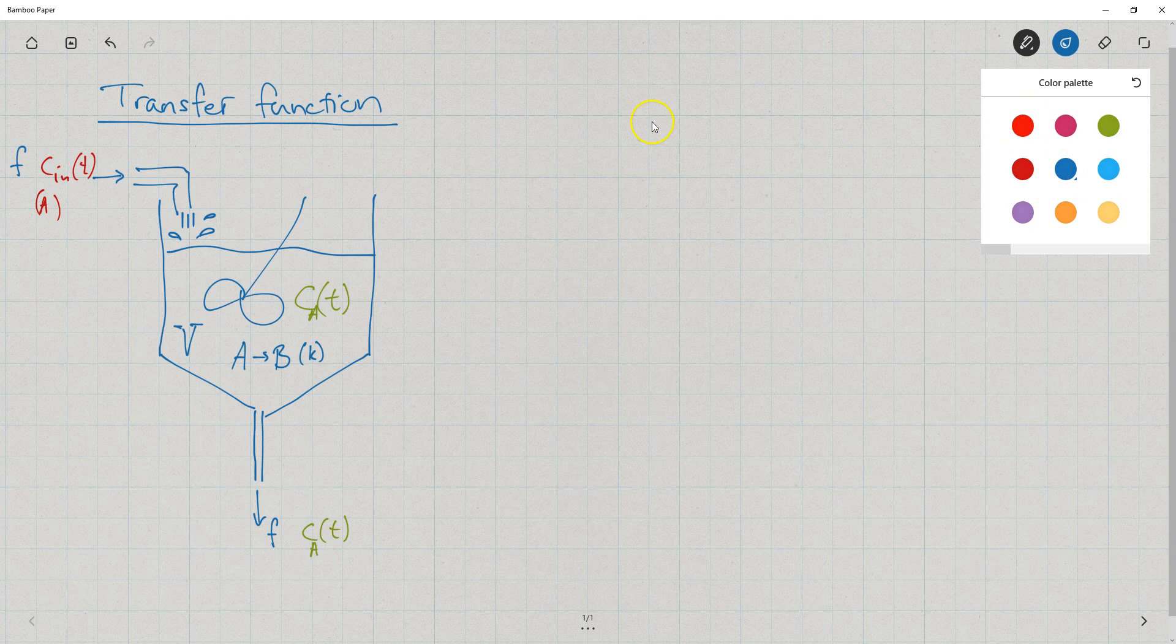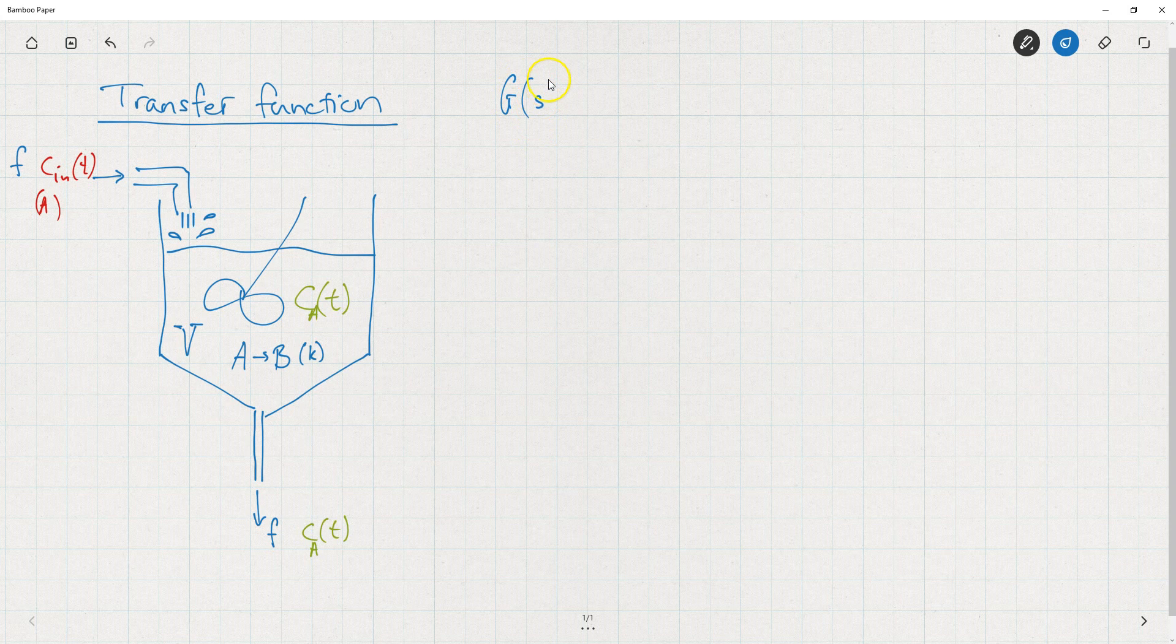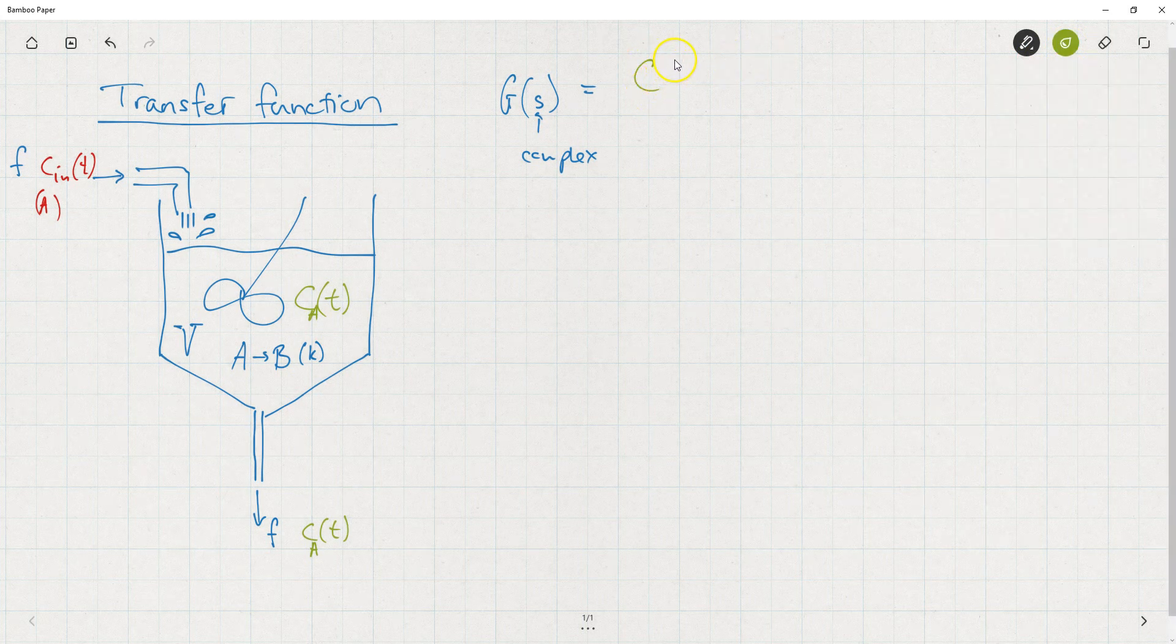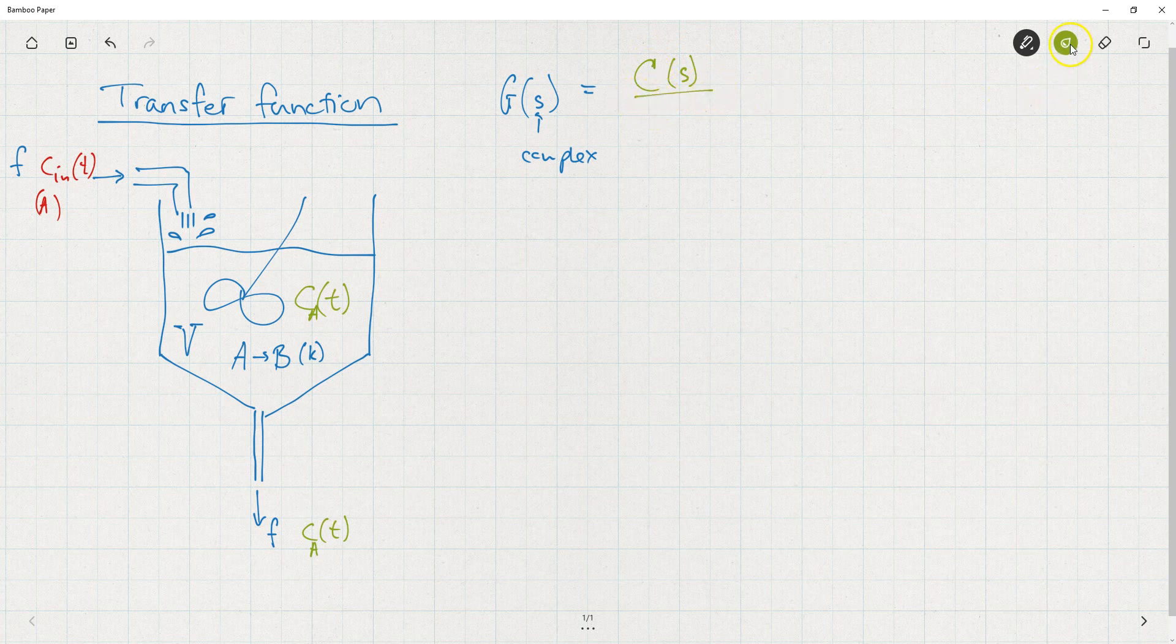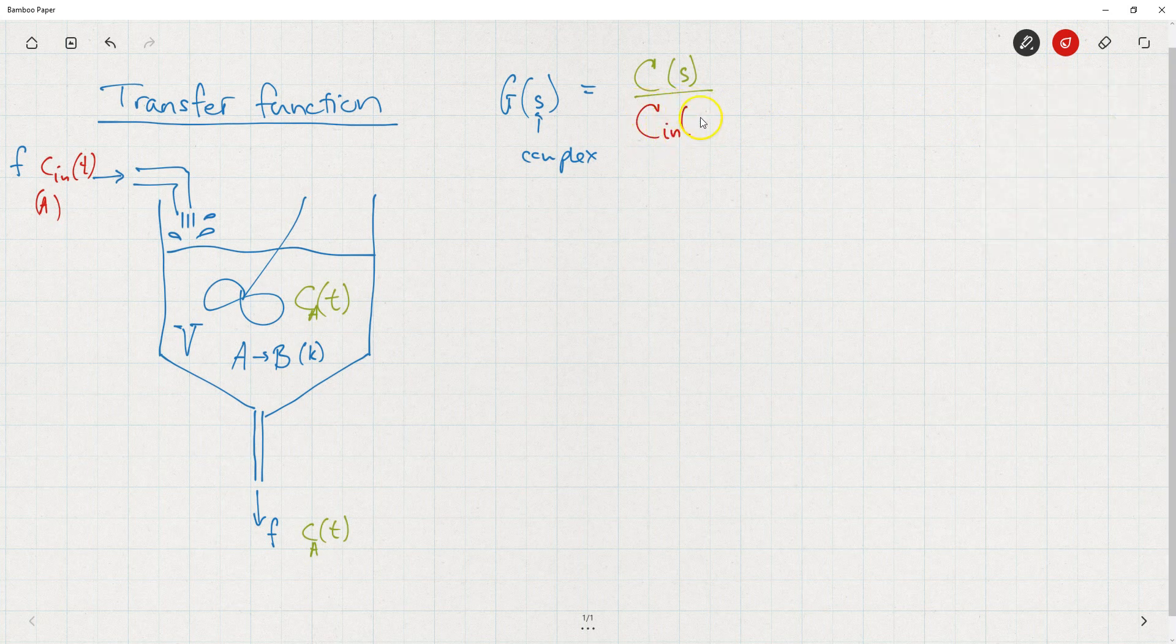The transfer function, typically we call it capital G of S, where S is a complex variable, is defined as the Laplace transform of the output, capital C of S, divided by the Laplace transform of the input, capital C_in of S.